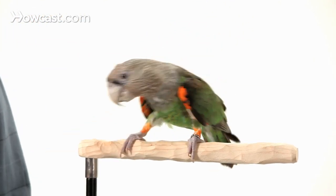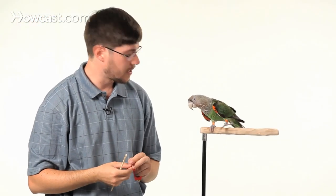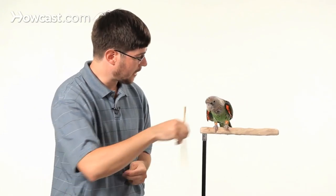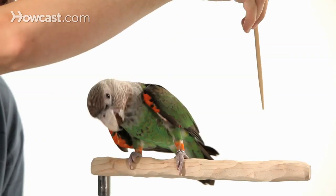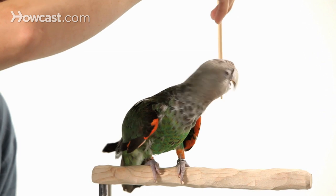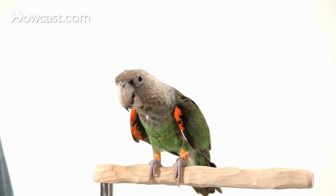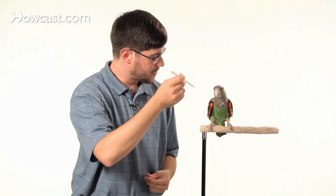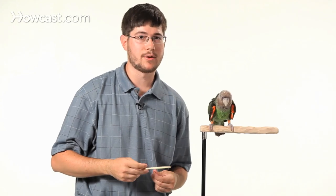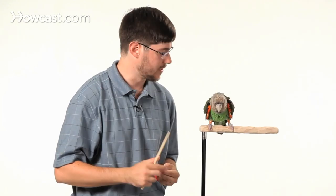So we're going to just start getting the parrot to learn to turn his head in a motion to follow the stick at least 90 degrees at first. Truman, target. Good. The choice is yours whether you target the bird from above or beneath. Some birds are afraid of things approaching them from above. You can target them from below.